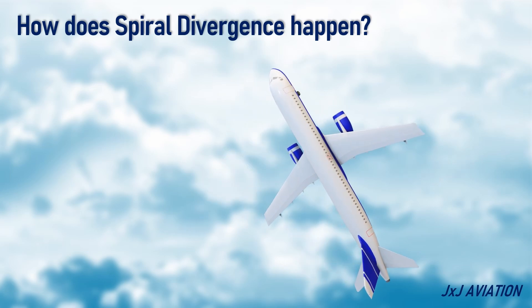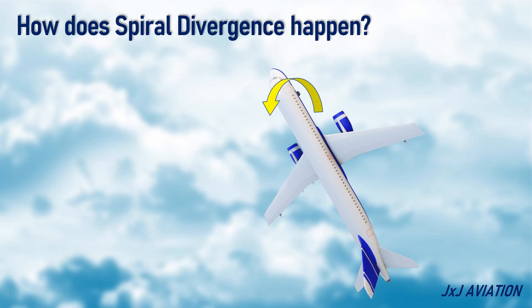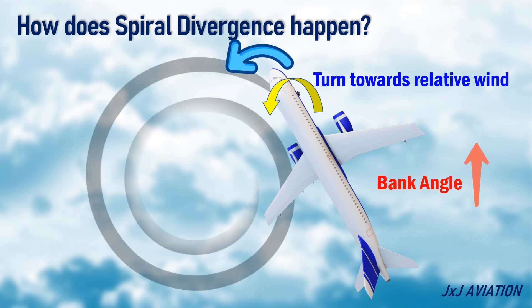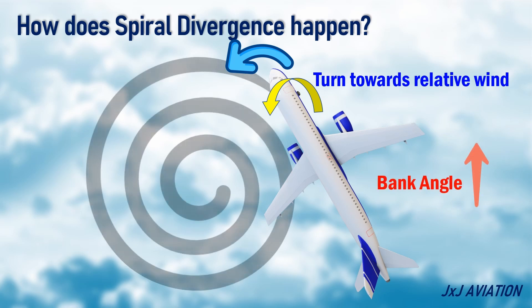Since this aircraft has a strong directional stability, the aircraft will try to turn to its original heading. However, since the lateral stability is weak, the aircraft will start banking further towards the left. The yaw stability will cause the aircraft to turn towards the relative wind direction. This causes the bank angle to continuously increase towards the left, and the turn starts to become tighter. This also means that the aircraft will start losing altitude.